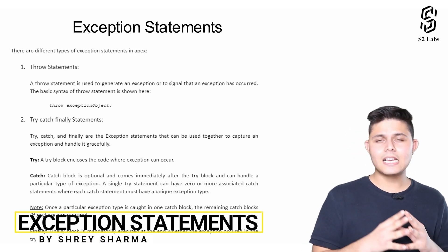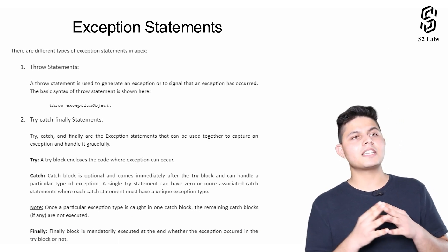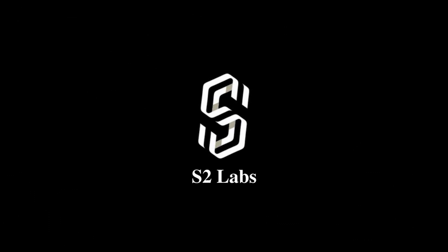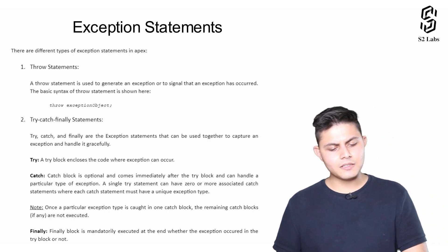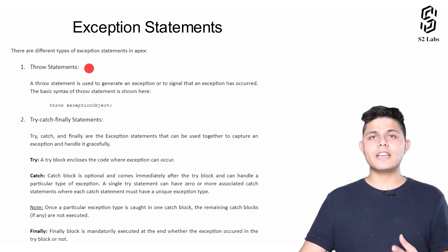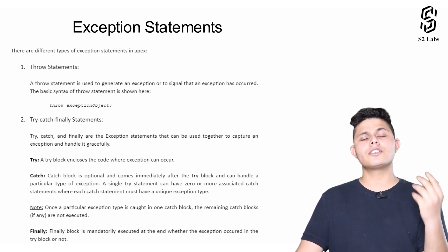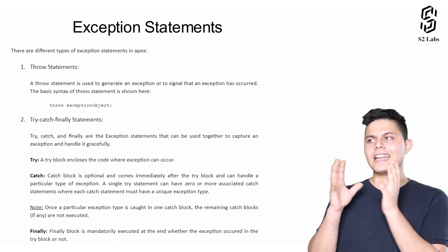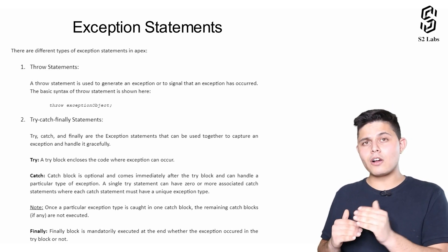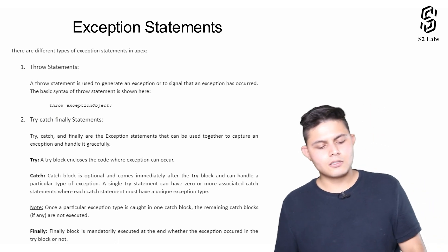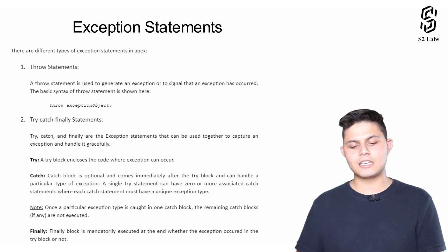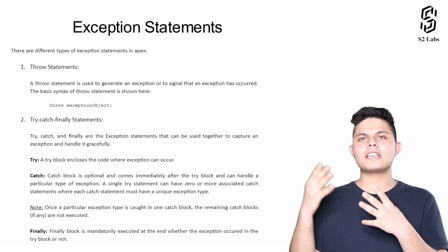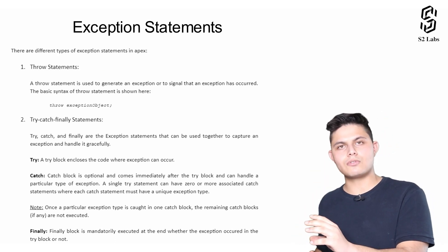After understanding what exactly an exception is, it's time to understand how we can handle it and what keywords or statements help us handle exceptions while the program is executing. The first is the throw statement, which allows you to throw an exception in a particular program. Whenever you face a particular problem and want to throw a particular type of exception, you use the throw keyword. A throw statement is used to generate an exception or to signal that an exception has occurred, helping you signal that there is an exception so the program can continue execution.